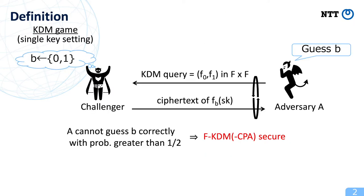This is the definition of KDM security. KDM security is defined by using a security game played by a challenger and an adversary. In this game, the adversary can make a KDM query consisting of two functions f0 and f1 contained in function class capital F. For this query, the challenger returns an encryption of fb of sk, where sk is the secret key and b is the challenge bit. If no PPT adversary can guess the challenge bit b correctly with probability significantly greater than one half, we say that the scheme is F-KDM-CPA-secure, or just F-KDM-secure.